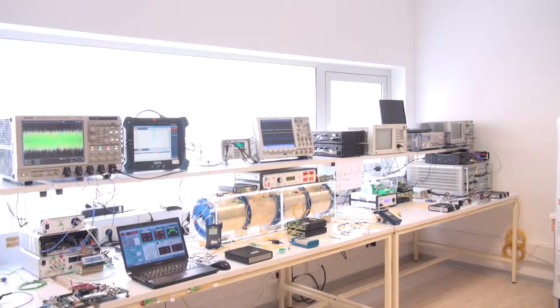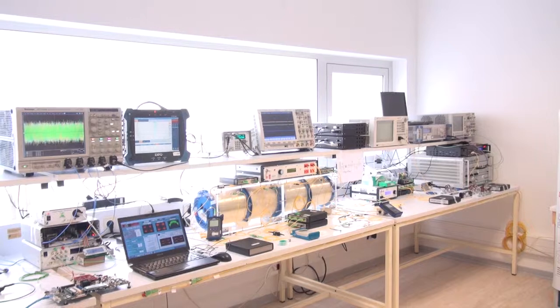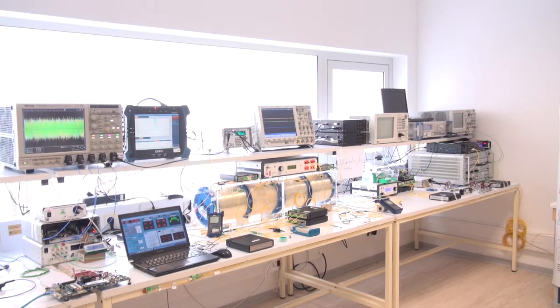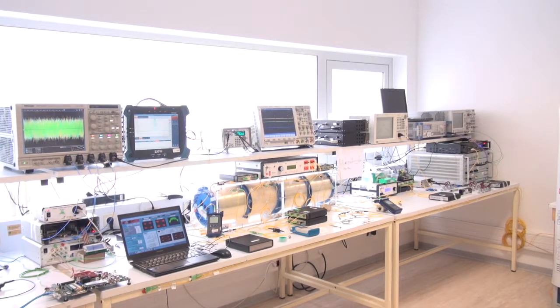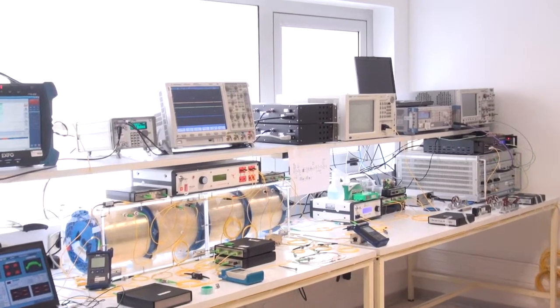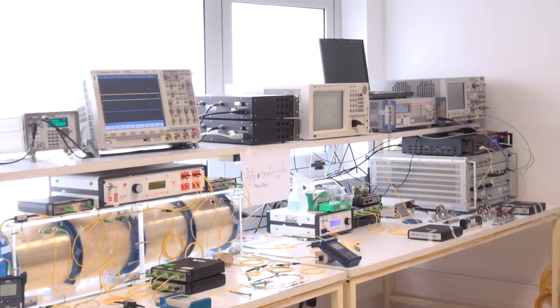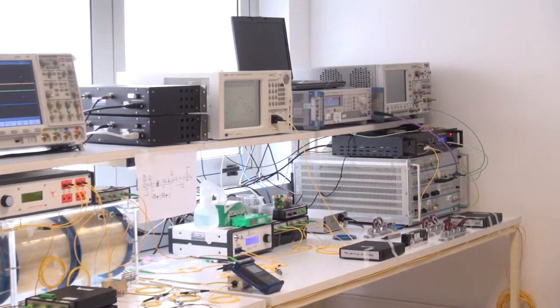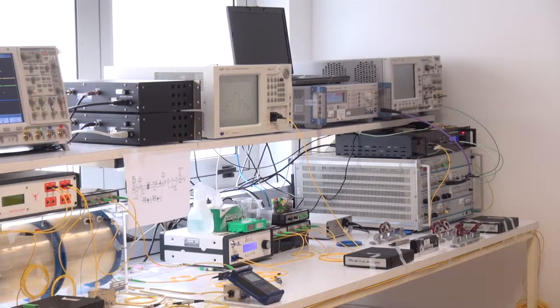And finally, with this setup, we could transmit 100 gigabit per second dual polarization QPSK signal over 6400 kilometer fiber by keeping BER below the forward error correction threshold of 3.8 times 10 power minus 3.